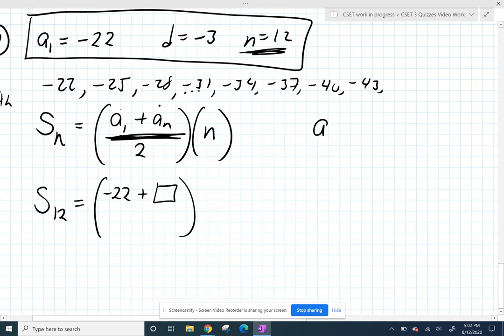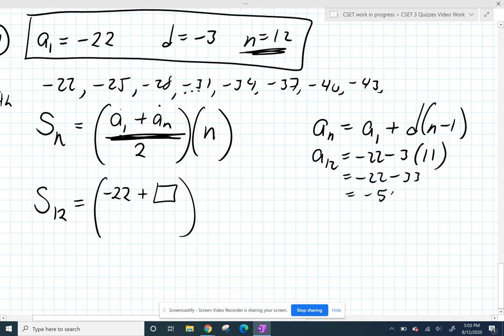Remember, we have a formula for the explicit term. You only need to know these two formulas, and the formulas make sense. I can get any term I want by starting off with the first term and adding my common difference n minus 1 times. So if I want my 12th term, I'm just going to start off with negative 22 and add my common difference. So basically subtract 3, and I'm looking for the 12th term, so I'm going to subtract 3 eleven times. So negative 22 minus 33 is negative 55.